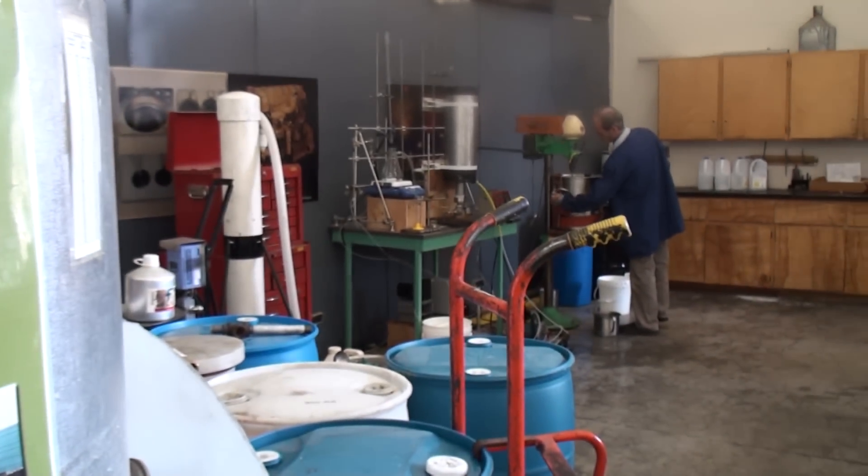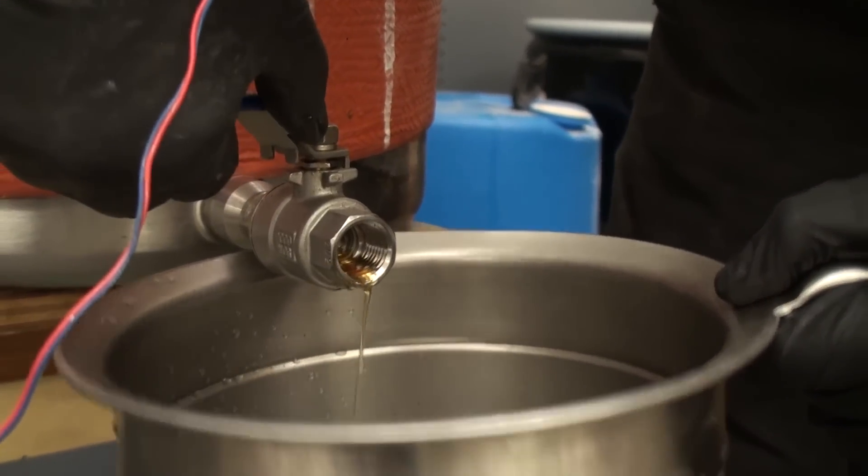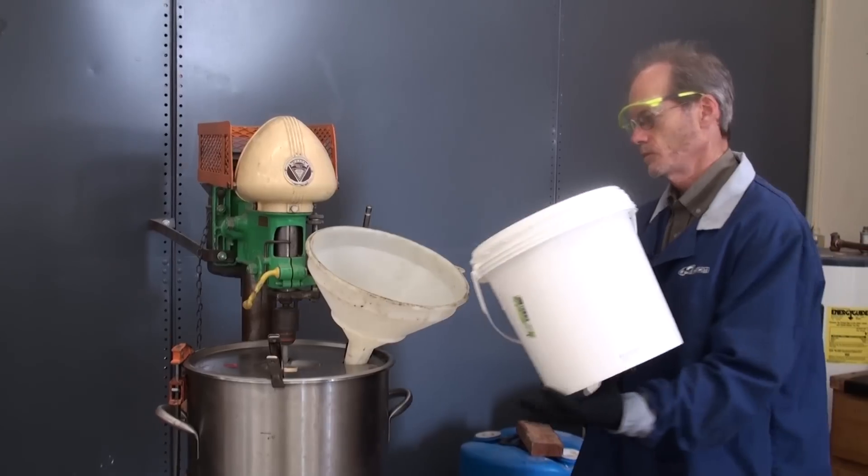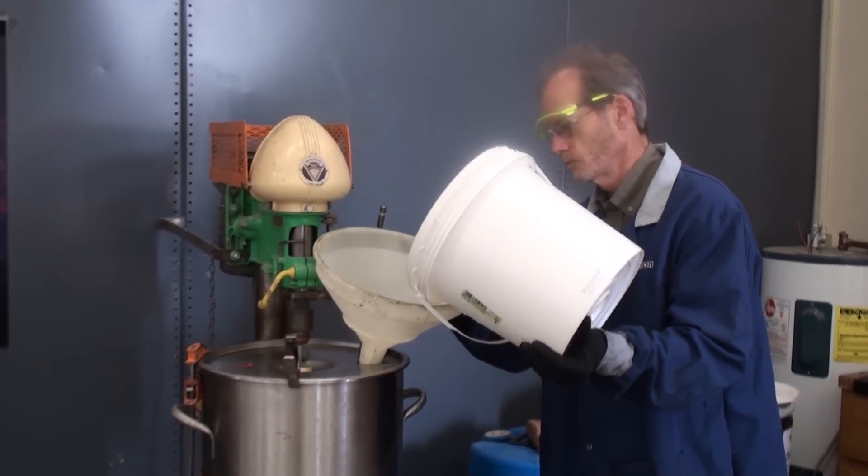After an hour, we let the product sit for about 30 minutes. The heavier glycerin settles to the bottom. We drain off as much of the glycerin as we can, add the remaining 20% catalyst mixture, and heat and agitate again.